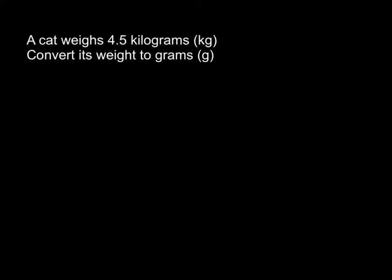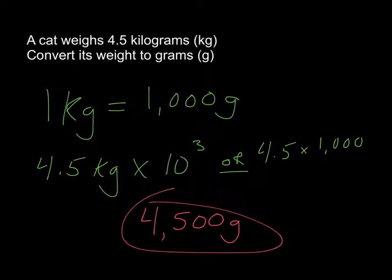This problem is, a cat weighs 4 and 5 tenths of a kilogram, or 4 and a half kilograms. Convert its weight to grams. When I solve this problem, I write down that 1 kilogram is the same as 1,000 grams, so that I have my point of reference where I'm starting with. And then I show my next step. I have 4 and a half kilograms times 10 cubed, or 10 to the power of 3, or 4 and a half times 1,000. Remembering that 10 to the third, 10 cubed, is the same as 1,000. And when I solve that, I see that I have 4,500 grams. Also note that I did label it, because you'll frequently get it marked as incorrect if you do not include a label. Try one more problem.